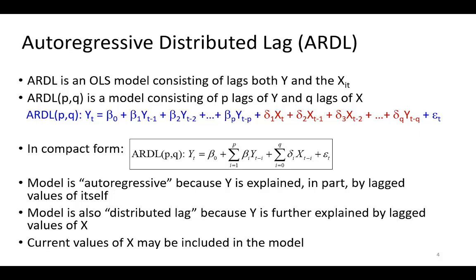The ARDL is autoregressive because Y is explained in part by lagged values of itself. It is also distributed lag because Y is further explained by lagged values of X. Current values of X may also be included in the model, but that is up to the researcher.